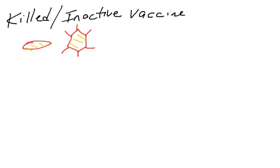In the killed or inactivated vaccine, the pathogen is either heated up or chemically treated so that it is not able to cause disease. It doesn't cause infection either, though. So it doesn't replicate.